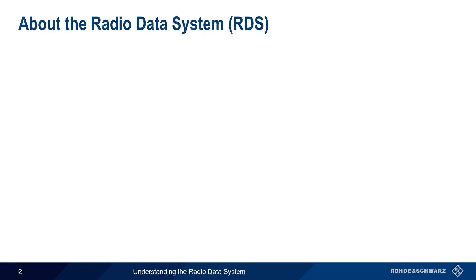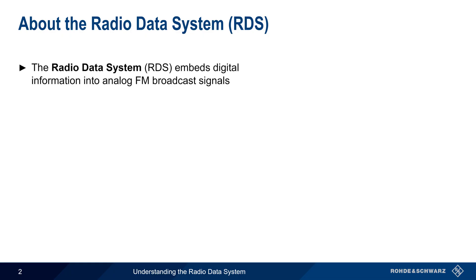The Radio Data System, commonly abbreviated RDS, is a method of embedding digital information into analog FM broadcast signals, and is defined in IEC Standard 62106.